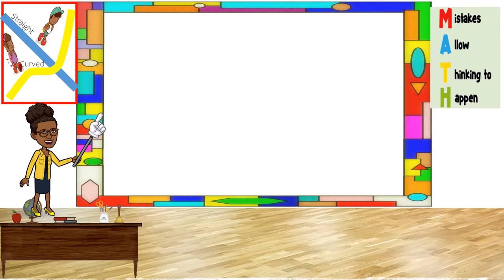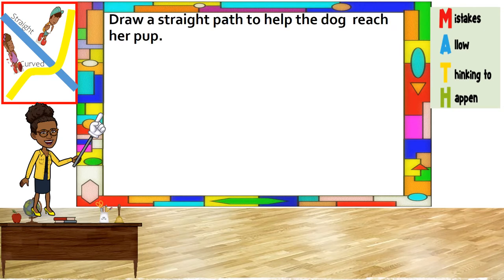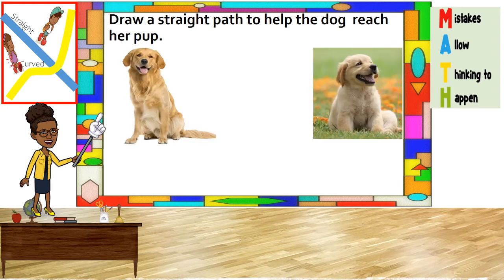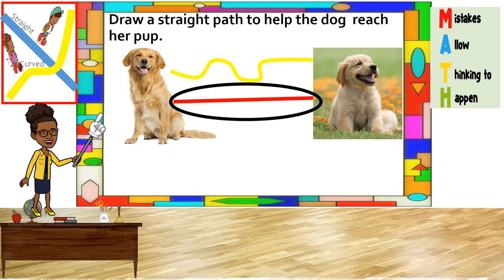Now, let us identify the straight path from the dog to her pup. Do you remember what a straight path is? The straight path is the one that goes in only one direction. Which of these two paths only goes in one direction? The red path is correct — the red path is a straight path.